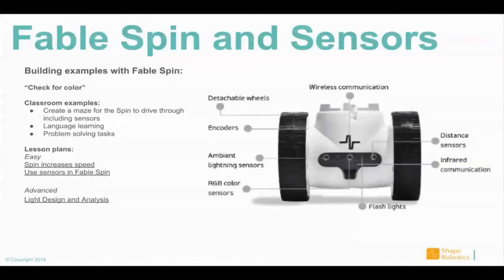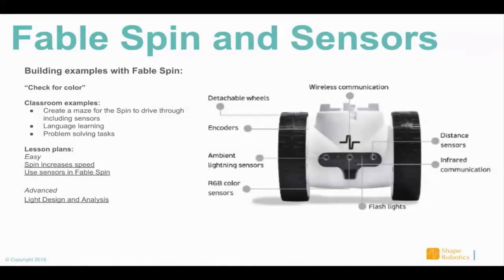The different sensors you can work with include proximity — using distance sensors — to create really interesting exercises. I've put links here to easy and more advanced exercises. Use it for problem solving, creating mazes where students work through it with teamwork, competing for the best time going through a maze. There are loads of different ways to work with the spin module because of the sensors — it's a really interesting tool.